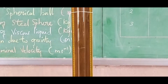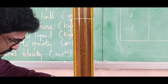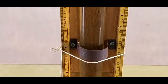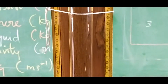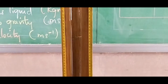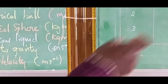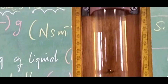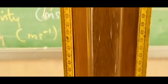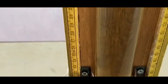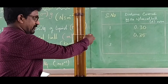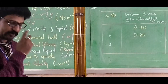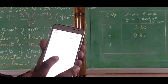We repeat the same experiment for a different distance. The reference point B is changed from 75 centimeters to 80 centimeters. Now reference B is at 80 centimeters and reference point A is at 40 centimeters. The distance between these two is 40 centimeters, which in meters is 0.40 meters. A metallic sphere of diameter 3 mm is dropped, the stopwatch is started at reference A and stopped at reference B. The time taken is 6.35 seconds.